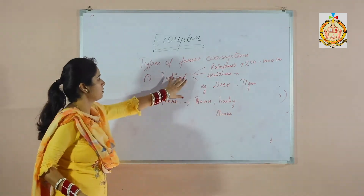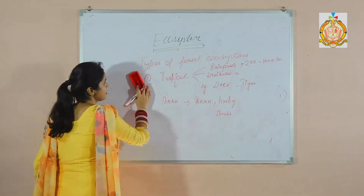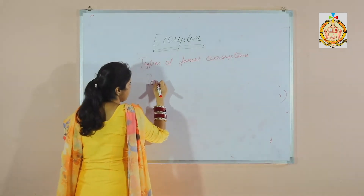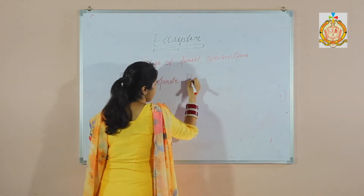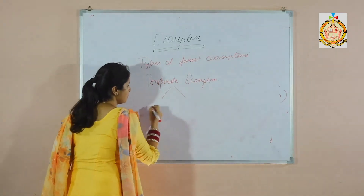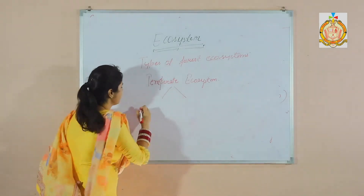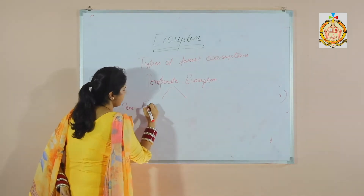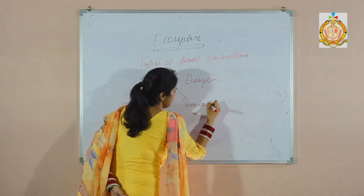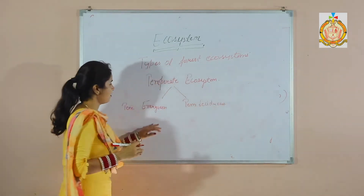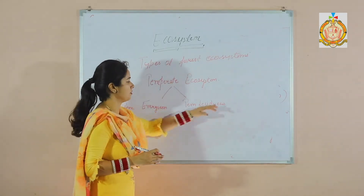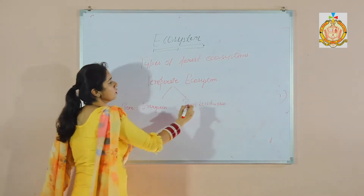This covers the tropical forest ecosystem. The second major group is the temperate ecosystem, which has two types: temperate evergreen and temperate deciduous. Evergreen means all the time green, and deciduous means they remain dry most of the time. They are present in the coastal areas.